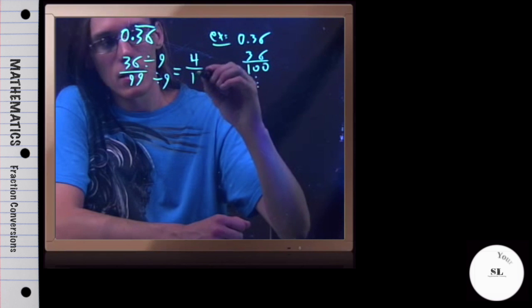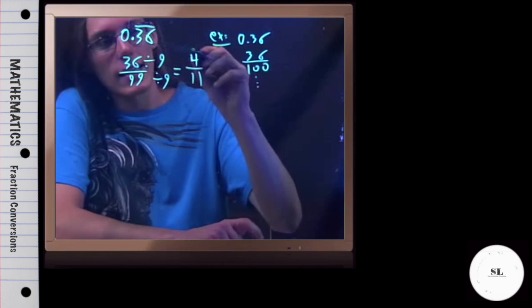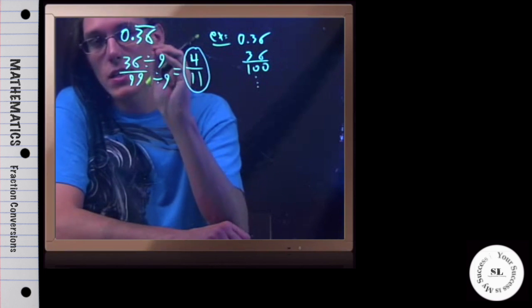And if I could reduce any further, I would, but I can't. That's the completely reduced fraction, and that, 4 elevenths, is 0.36 forever.